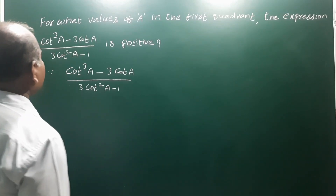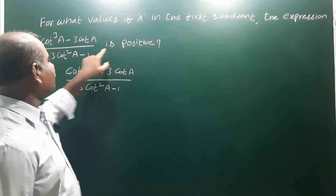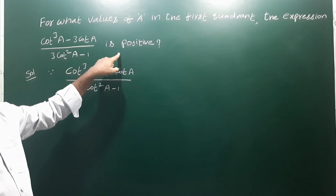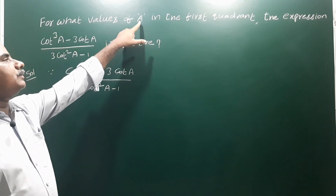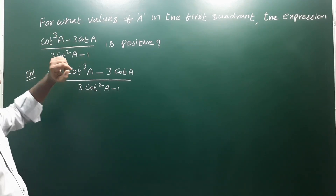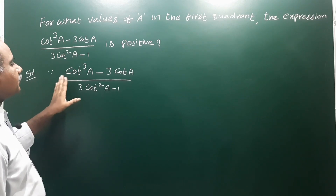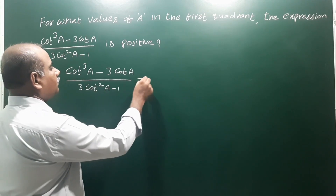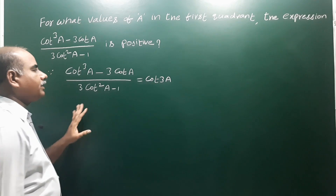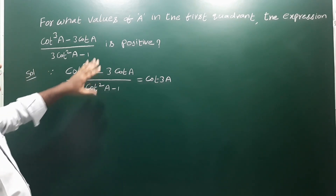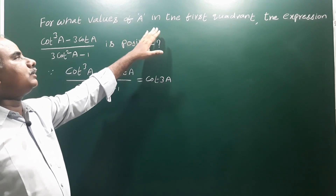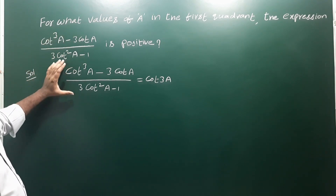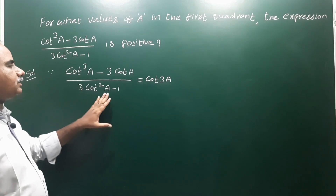Next problem: for what values of 'a' in the first quadrant is the expression (cot³a - 3cot a) / (3cot²a - 1) positive? We have to find the values of 'a' for which this expression is positive in the first quadrant. Since cot³a - 3cot a / (3cot²a - 1) is the formula for cot 3a, and 'a' is in the first quadrant.